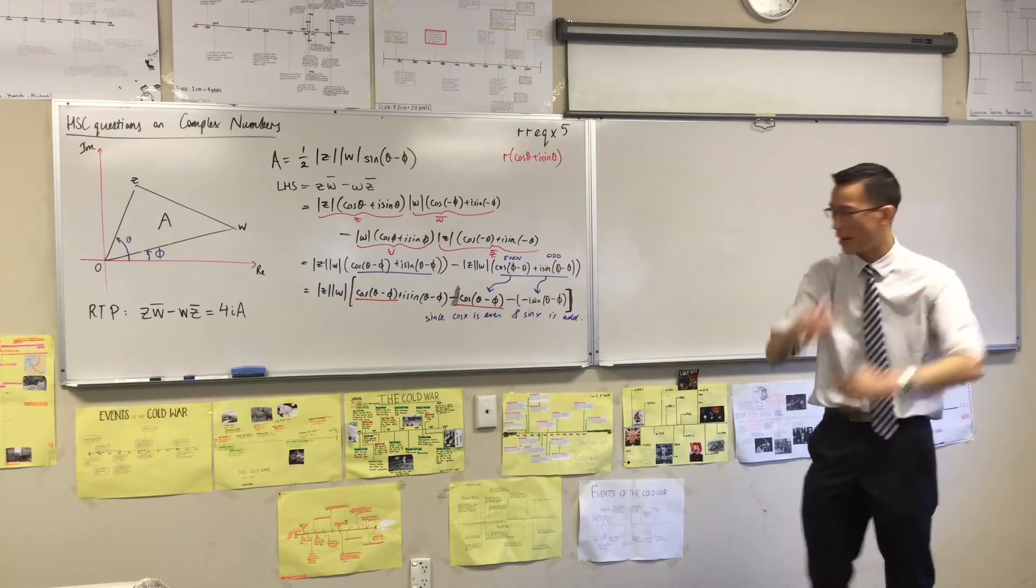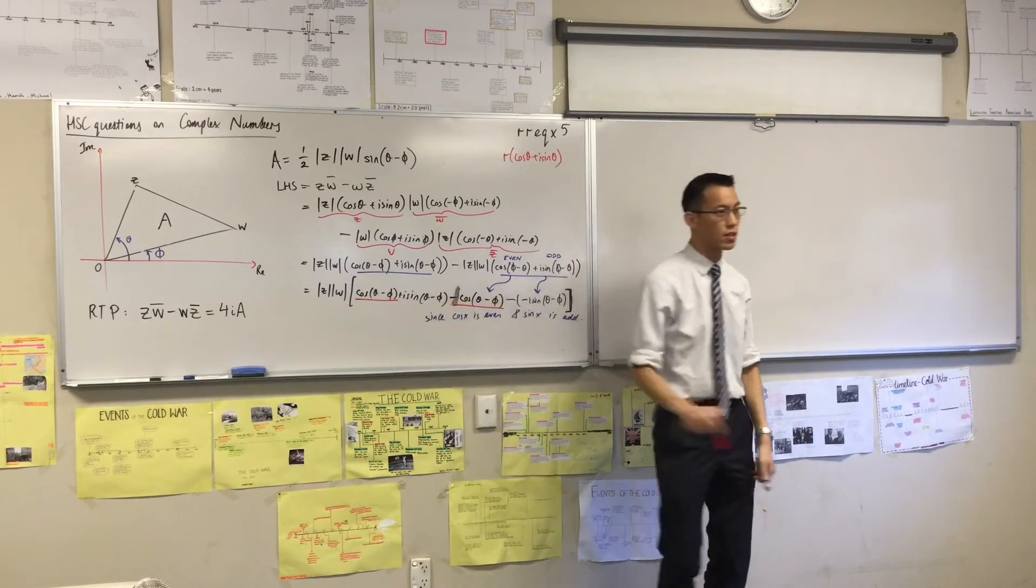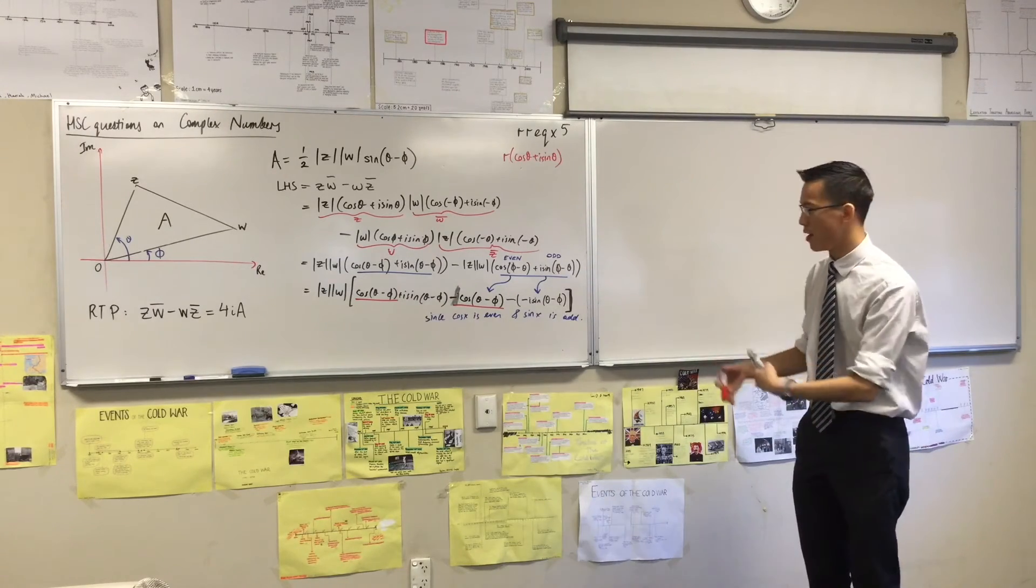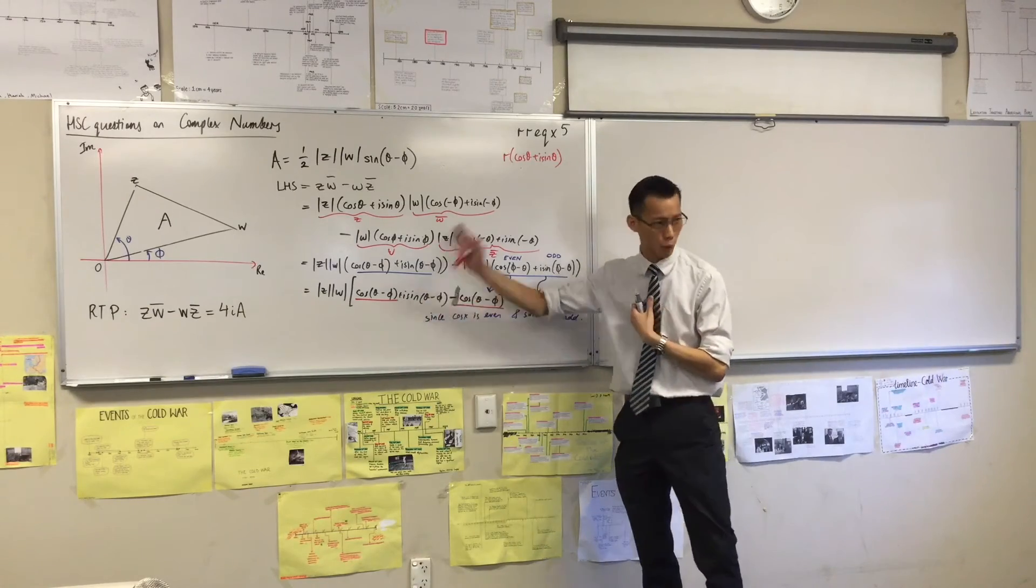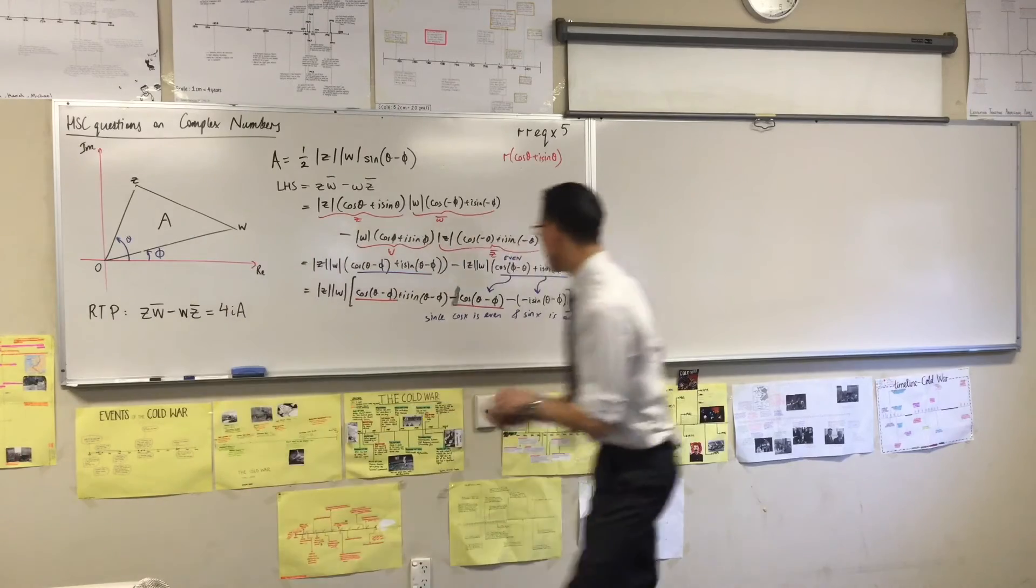I highly recommend you underline those terms rather than crossing them out because it's clear I'm combining them, but as a marker, I can still read what you've written. It's not like this has just been erased. I can see how you're combining them. Okay. That's good.